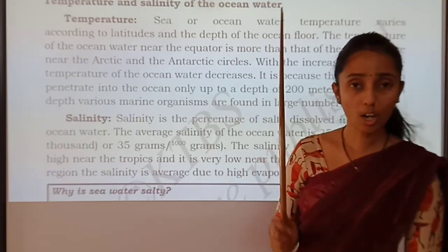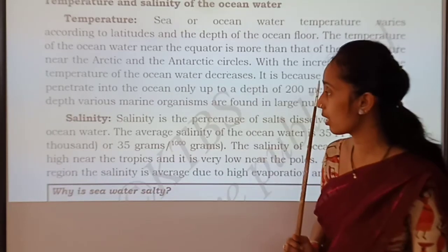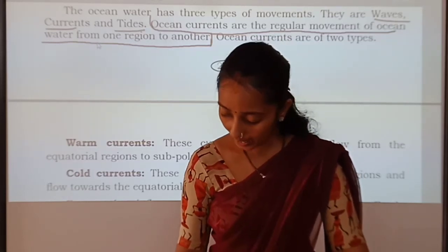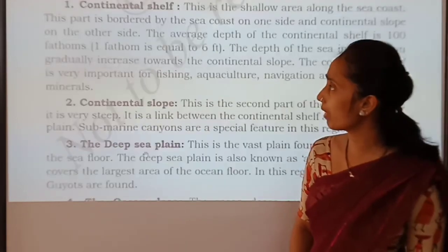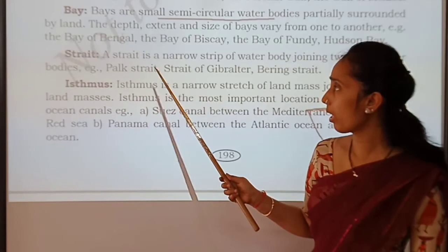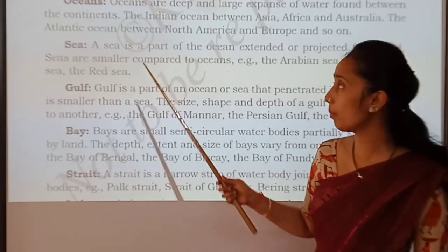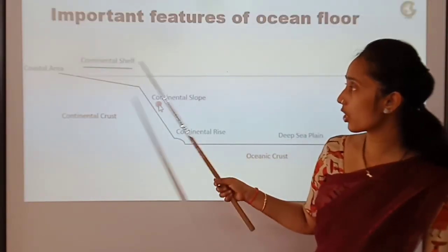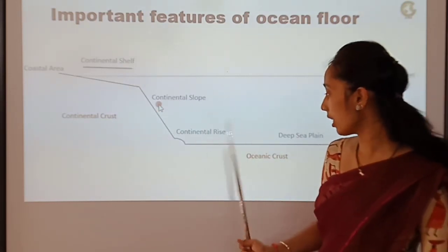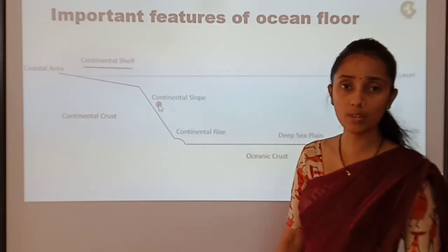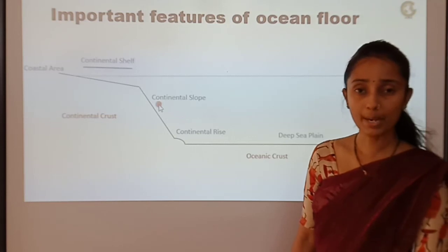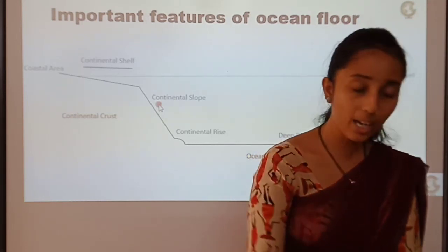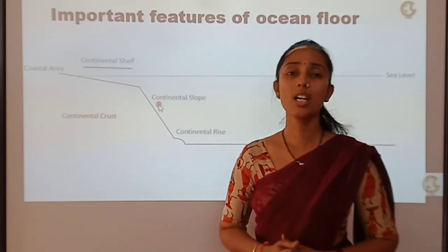The remaining parts like ocean currents and tides we are going to cover in the next class. Today we learned the different types of water bodies — ocean, sea, gulf, bay, strait, and isthmus — as well as the important features of the ocean floor: continental shelf, continental slope, continental rise and ocean deep. We also covered temperature and salinity. Read the lesson once and underline the importance of bay and strait. I will meet you in the next class, children. Till then, read well. Take care.